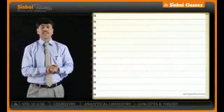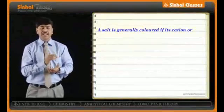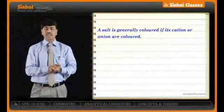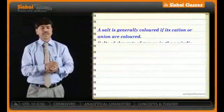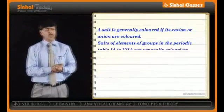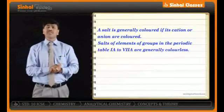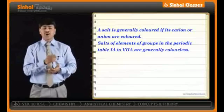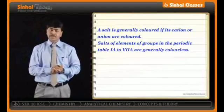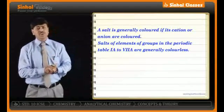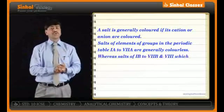Salts are generally colored if the cation, the anion, or both are colored. Salts of groups 1A to 7A are generally colorless, along with 2B group elements.